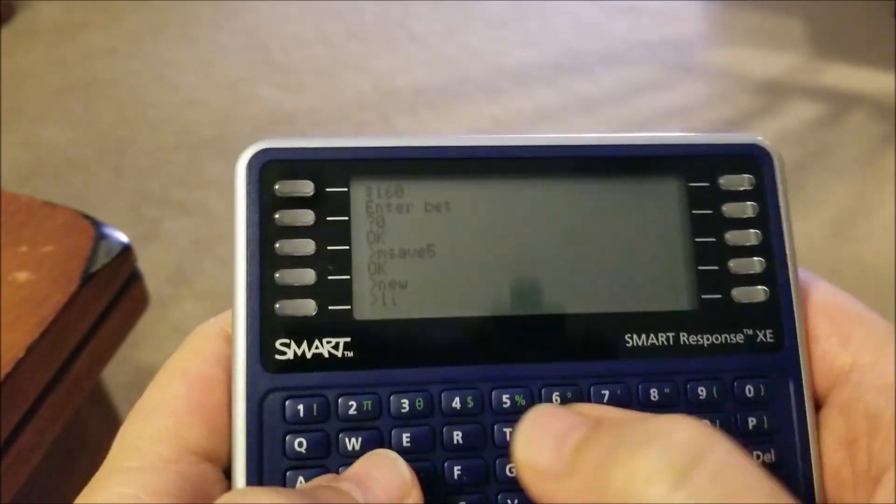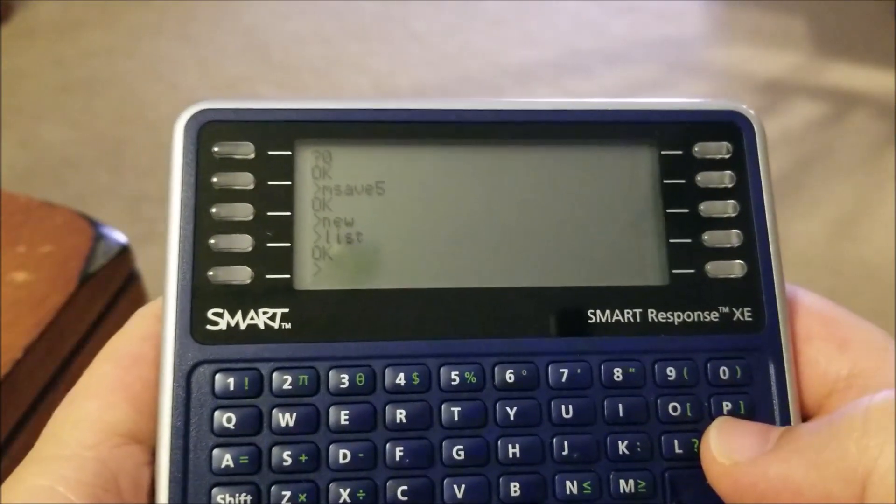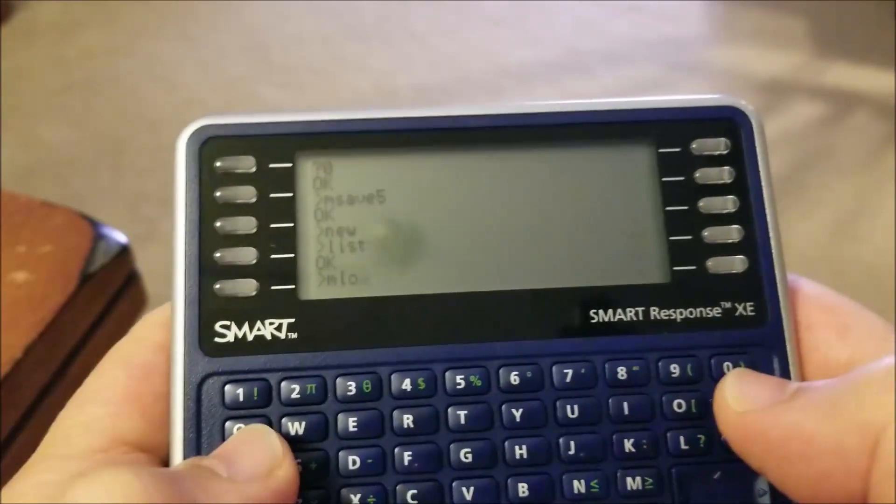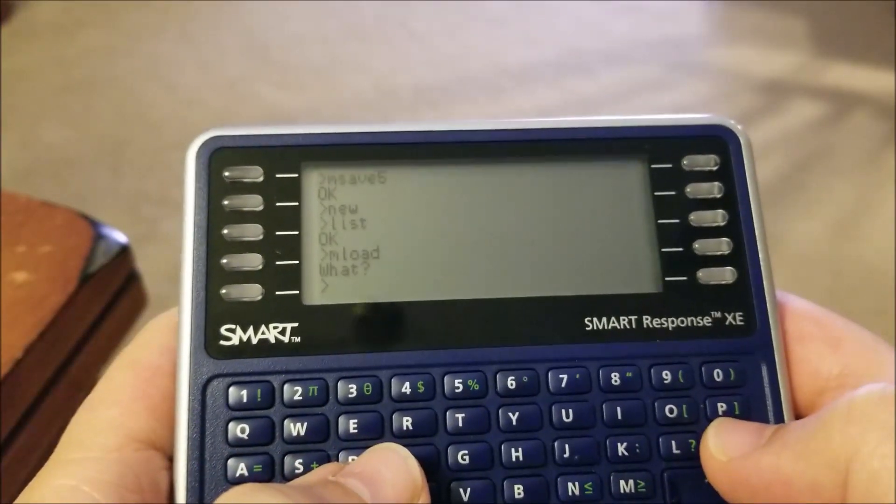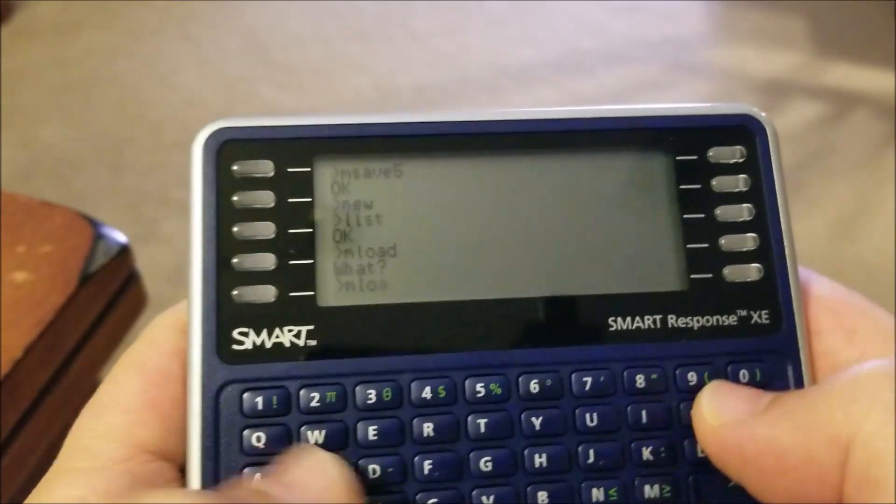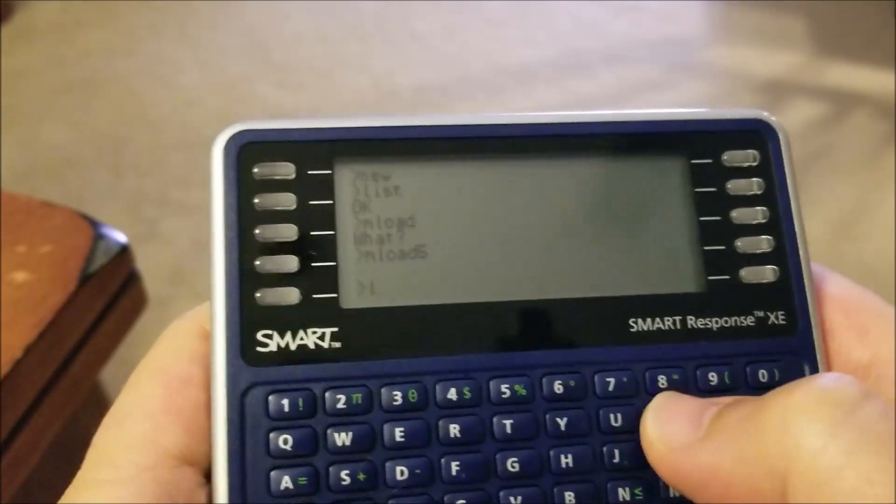If I type LIST, you'll see there's nothing there now because I typed NEW—anybody familiar with BASIC kind of knows these commands. Now I can say MLOAD. Oops, it said WHAT because I didn't give it a memory slot. If I do MLOAD and I go get five where I just stored that program, and I now hit LIST, you'll see that program's there.